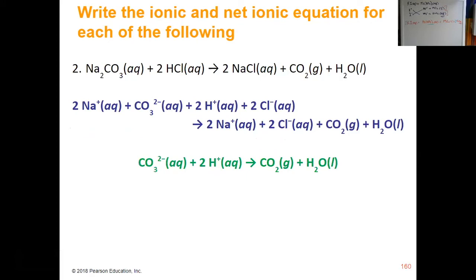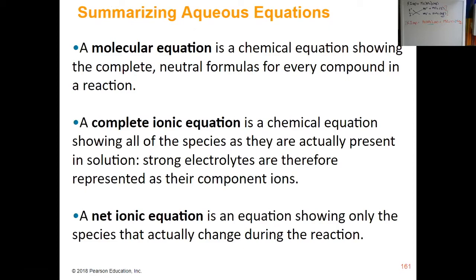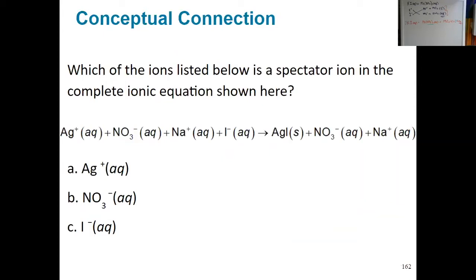Remember that anything with a gas or liquid notation does not break up into ion form — only things that are aqueous. So the first step is breaking up everything that is aqueous, then look for the ions that don't change. 2Na+(aq) stays as 2Na+(aq) — doesn't change. 2Cl−(aq) stays as 2Cl−(aq) — doesn't change. Things that do not change are spectators, and you remove them to write out your net ionic equation. In summary: a molecular equation shows the complete neutral formula for every compound; a complete ionic equation shows everything aqueous in ion form; and a net ionic equation removes spectator ions showing only the species that actually change in a reaction.